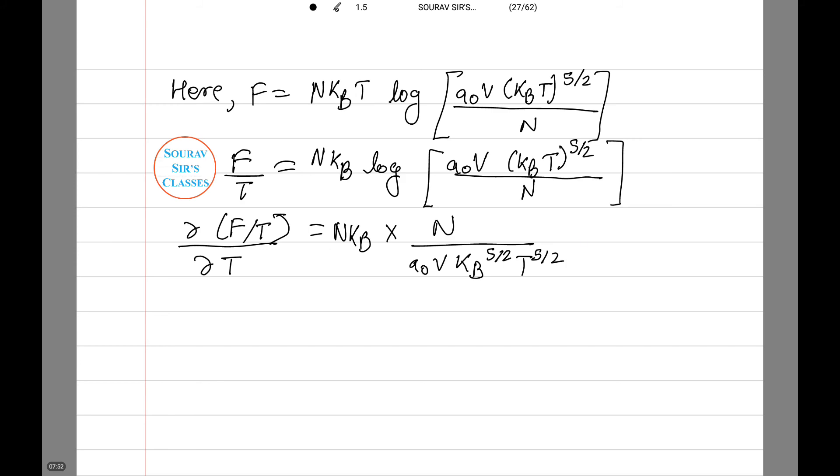This equals (5/2)NkBT^(-1). Therefore, U equals -T²(∂F/∂T) equals (5/2)NkBT. Thus, option B is the answer.